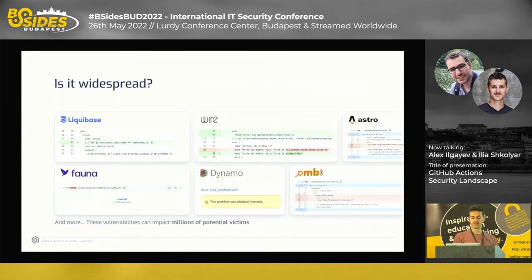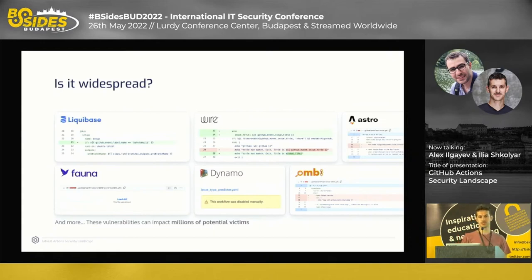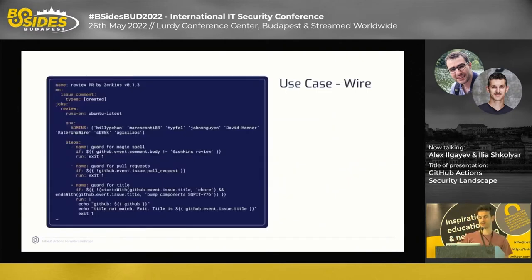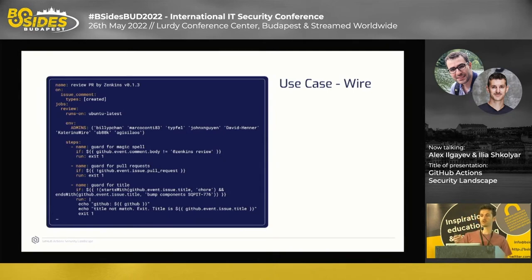We found many popular open source projects affected, such as LiquidBase — a tool for handling database schema changes — and Wire, an open communication platform, and many more. According to the download numbers and usage of these projects, these vulnerabilities are potentially affecting millions of users. Diving into Wire's specific workflow: it triggers on any issue comment — importantly, this event fires both for issue comments and pull request comments.